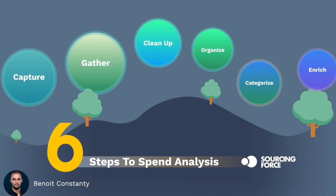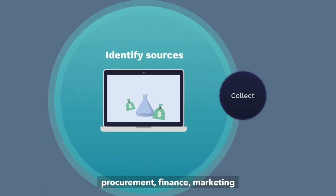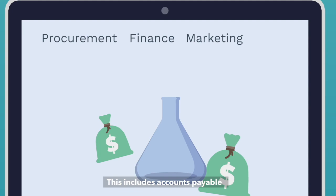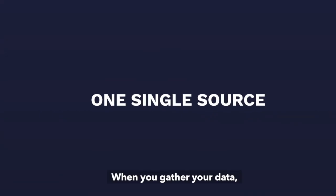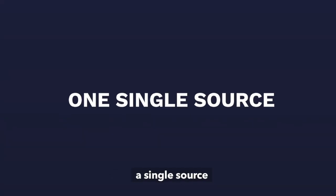First step: to capture your spend data, you'll need to start by identifying all the sources available, such as procurement, finance, and marketing. This includes accounts payable, general ledger, P-card, e-procurement systems, etc. When you gather your data, make sure you collect it into a single source.